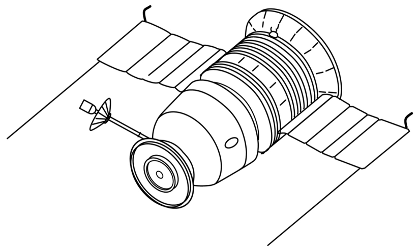Although unmanned, Zond 5 carried the first Earthlings to reach the Moon, including two tortoises, mealworms, wine flies, plants, and other lifeforms, and was also the first to return Moon travelers safely to Earth.